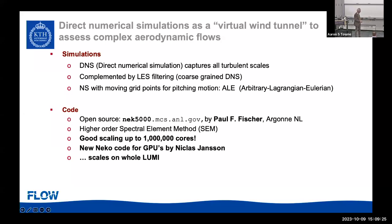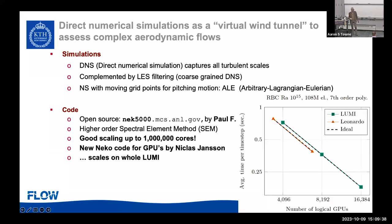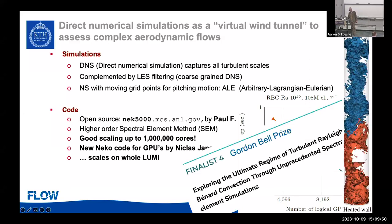That code now scales on the whole Lumi machine. Here's the scaling — it's linear all the way up to 16,000 GPUs, which is really nice. In fact, it's the first nomination in Sweden ever for the Gordon Bell Prize — it's a finalist. In that calculation, they're exploring the ultimate regime of turbulent Rayleigh-Bénard convection.